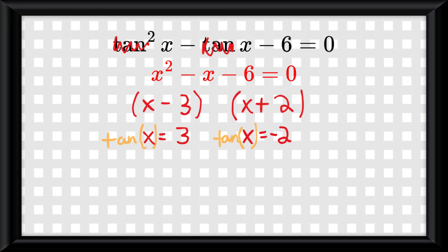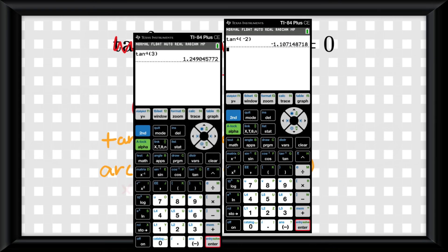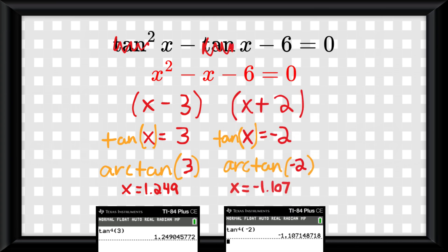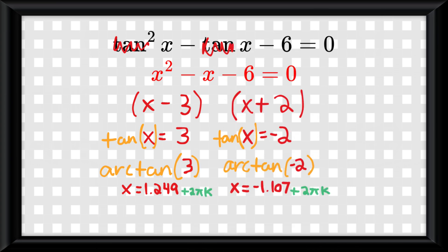So then we add the tangent back and we get these arc equations. These aren't traditional values on the unit circle, so this is where we plug it in on our calculator in radian mode, and we get x equals 1.249 and x equals negative 1.107, and then we slap the plus 2πk on it and we are done!